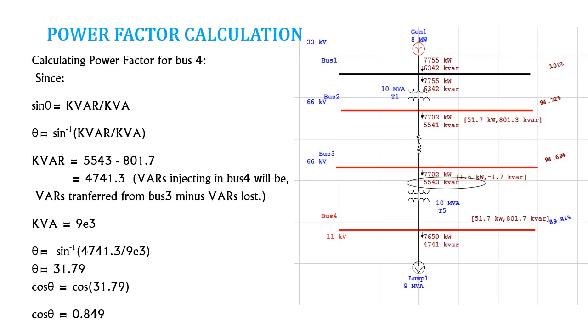will be actually 5543 minus these lost kVARs. So we are subtracting lost kVARs from the kVARs injecting from bus 3 and we have 9000 kVA since it is a 9 MVA load. And in this way we are calculating theta, taking the sine inverse of this term and then finding out the power factor. So the power factor at this condition is 0.849 or you can say 0.85 and our aim is to improve this power factor.